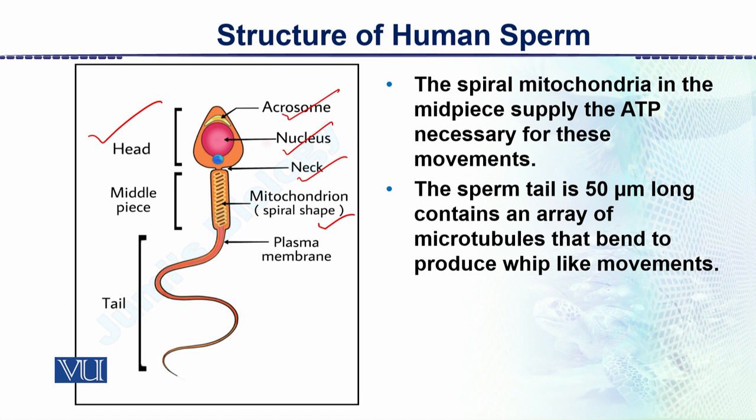The wriggling movement of the tail is not the only activity for the movement of the sperm. The vaginal tract and the female reproductive tubular system also help in moving the sperm upward to the site where it is to fertilize the egg.